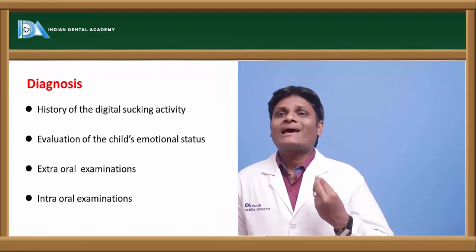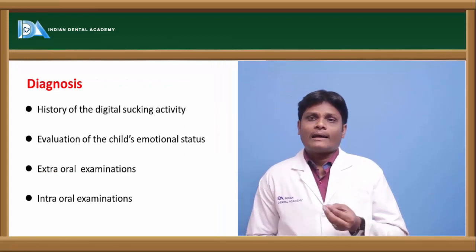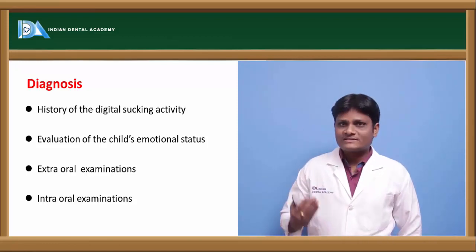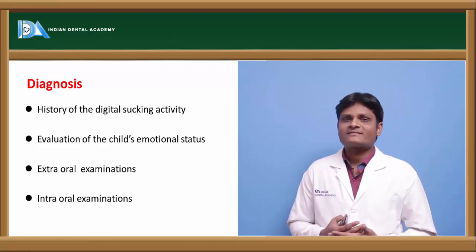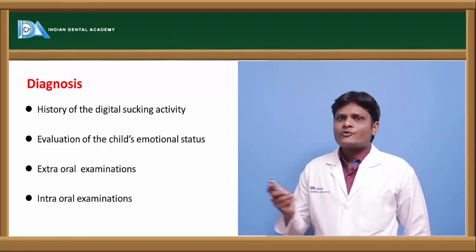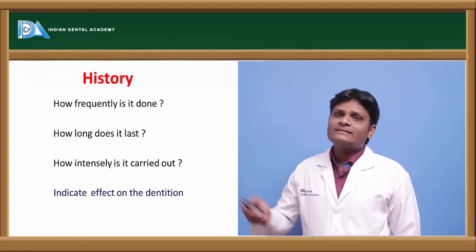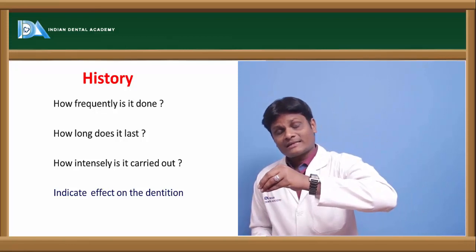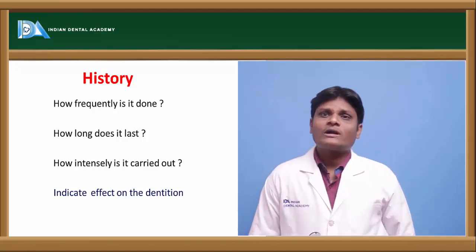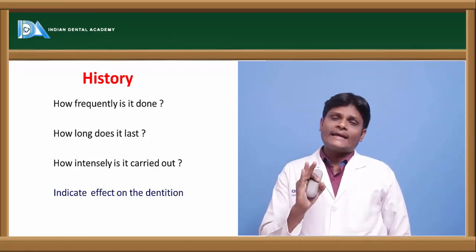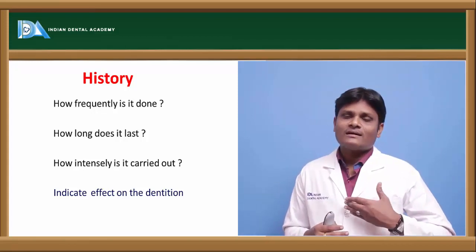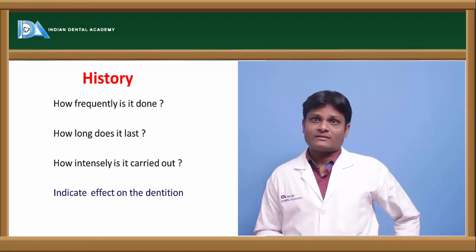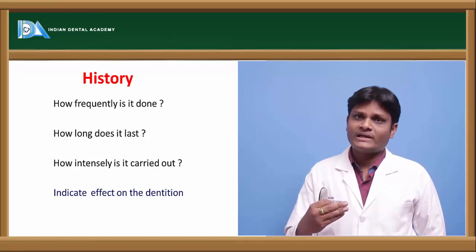To diagnose a digit sucking habit, we should take a history of the habit, evaluate the child's emotional status, and examine the patient extra-orally and intra-orally. In the history, we should ask about frequency, duration, and intensity of sucking. These three aspects reveal the degree of damage to oral structures — the more severe, frequent, and prolonged the sucking, the greater the damage to the dentition and orofacial structures.